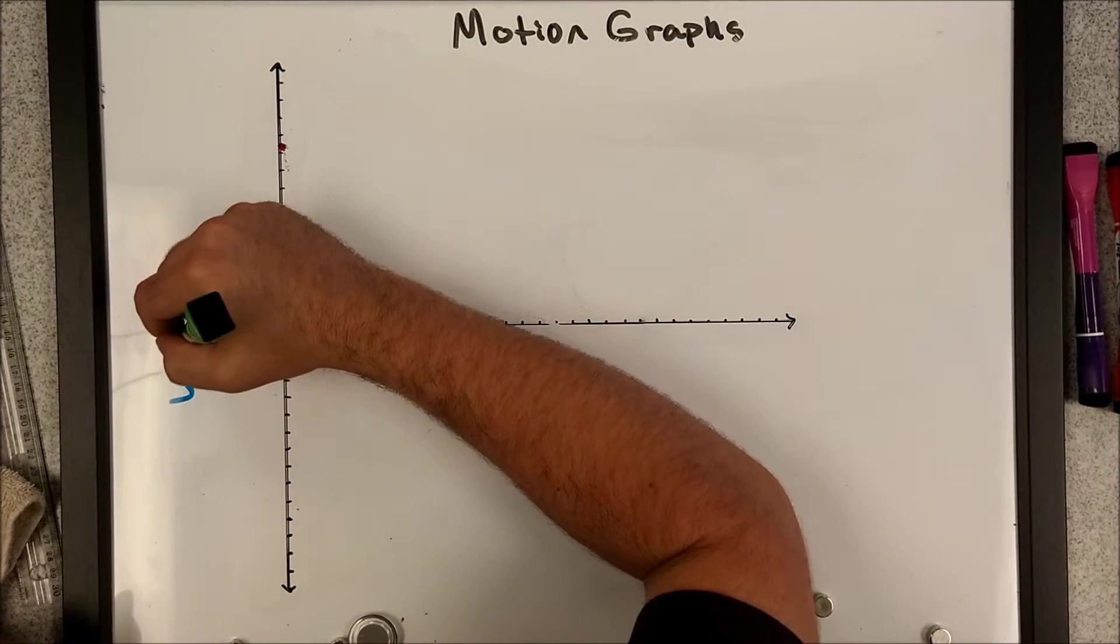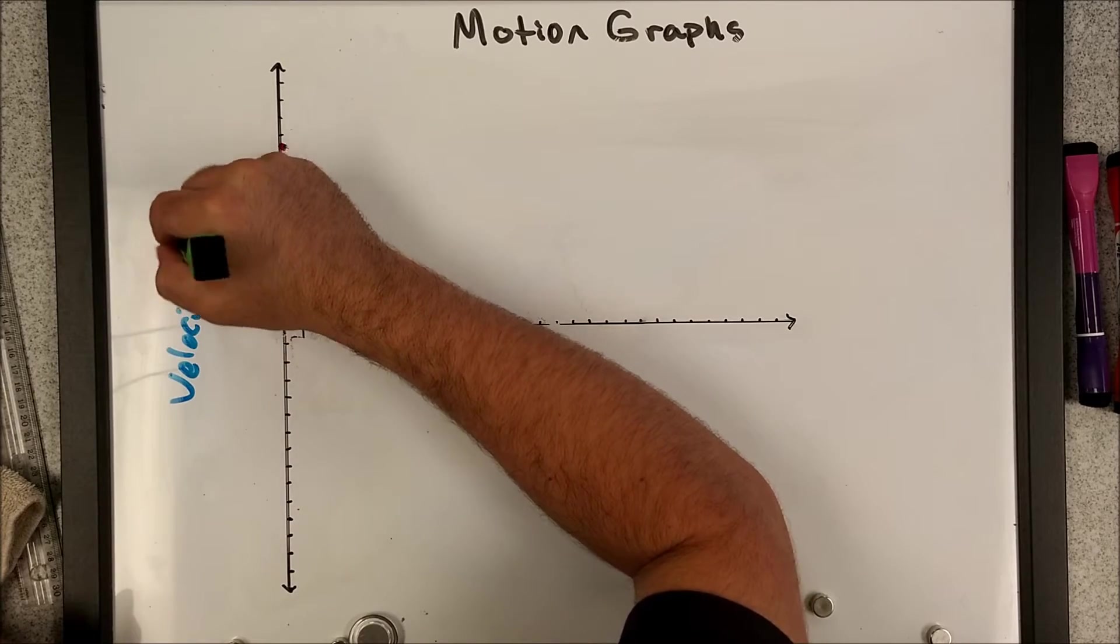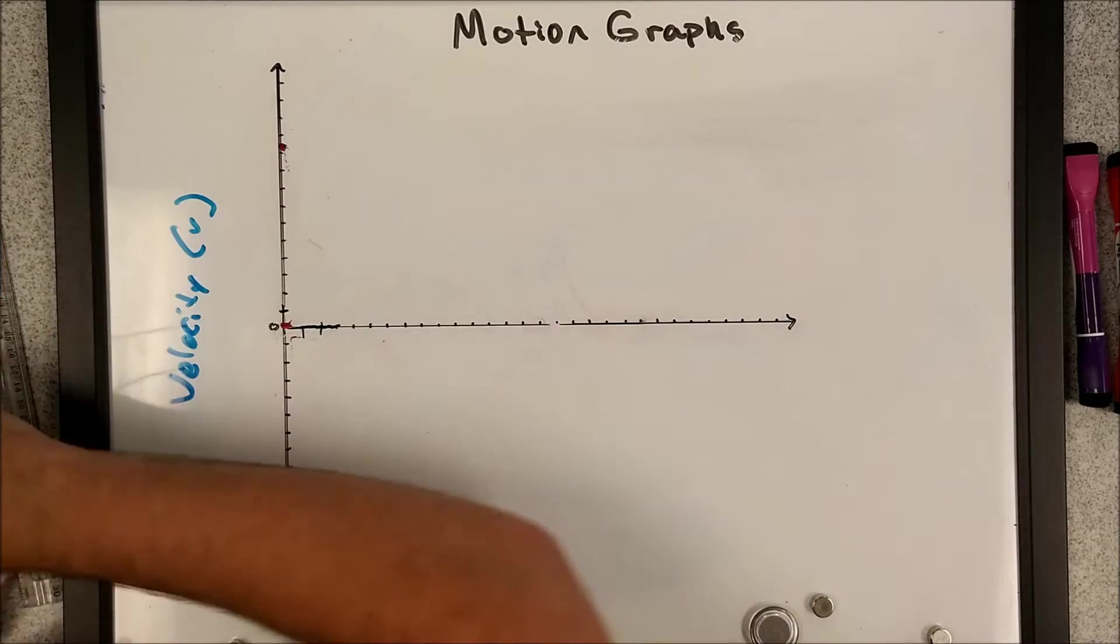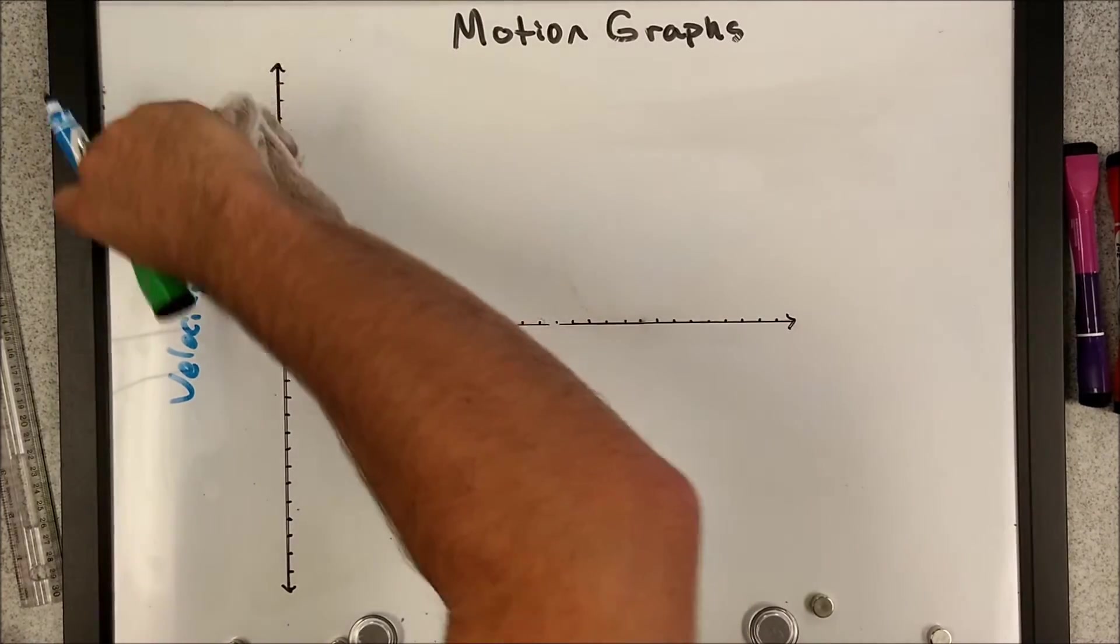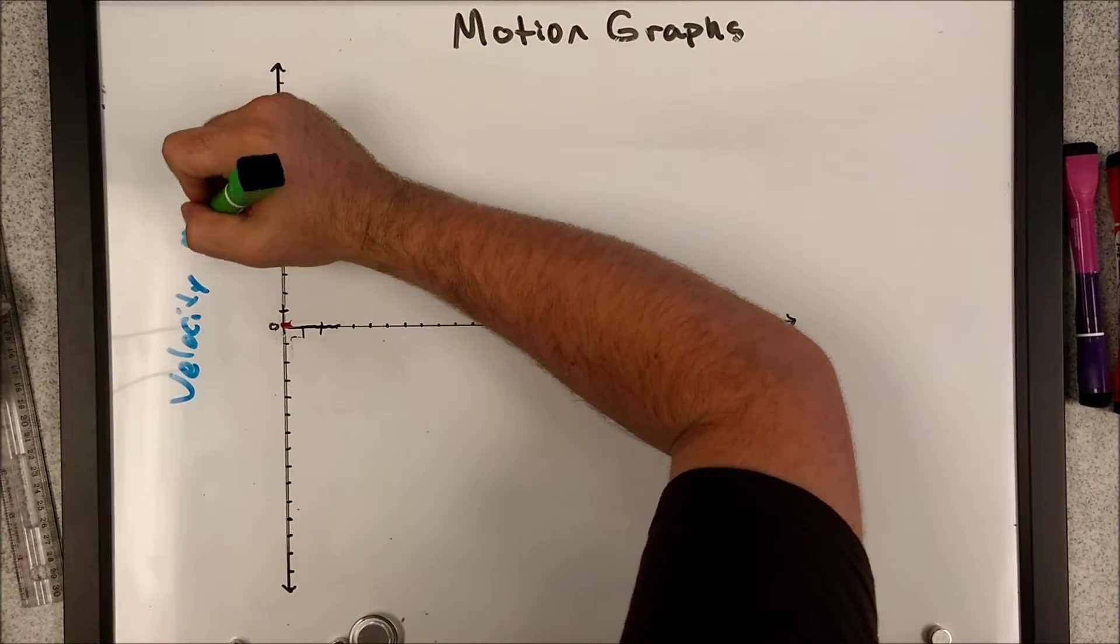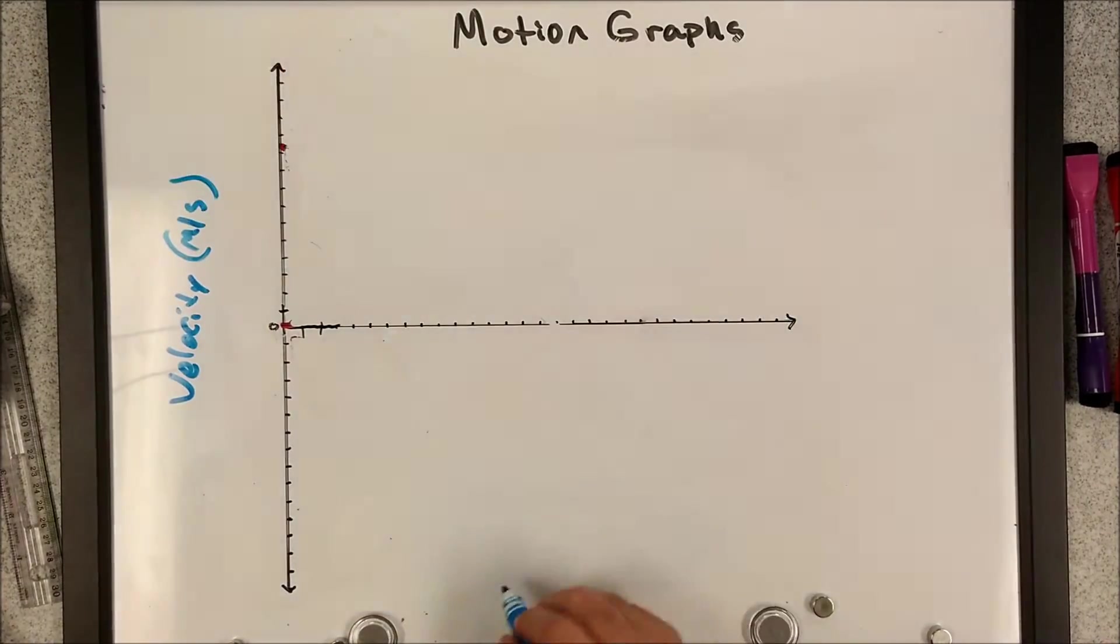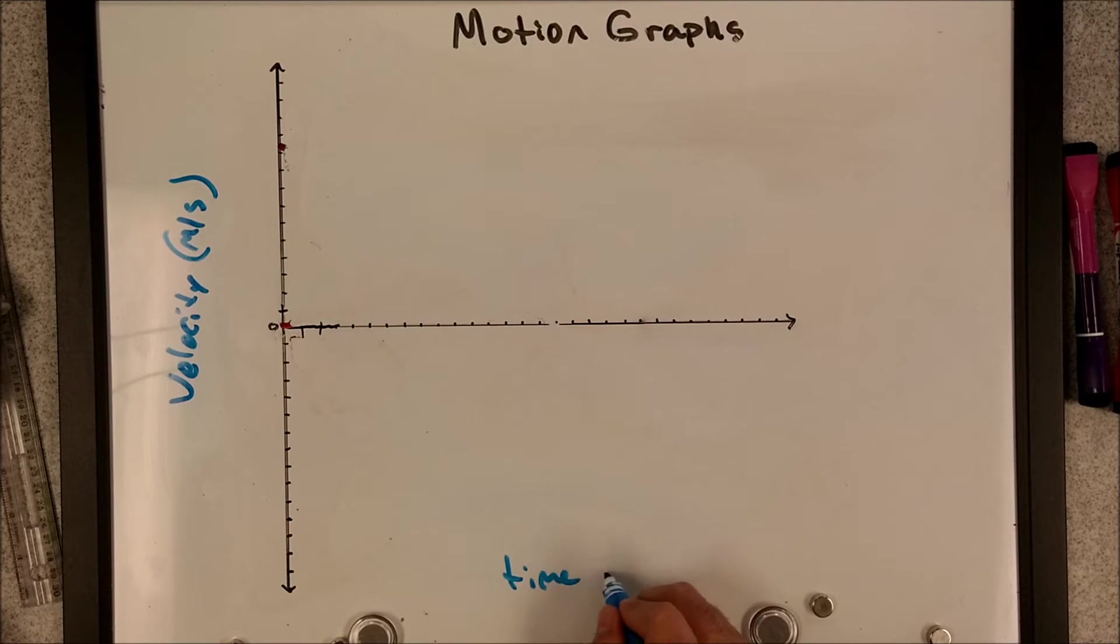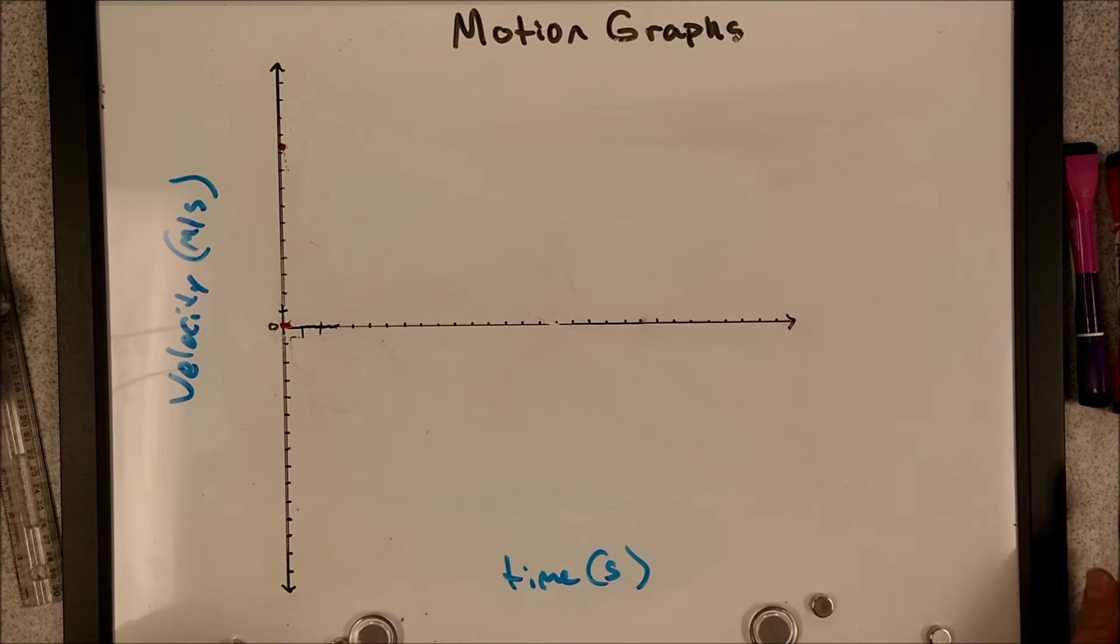We're going to put velocity on the y-axis. I can put my variable there, I'm going to put my units there. What are my units for velocity? Yep, meter per second. And then time down here is still seconds. It's still the independent variable, hence being on the x-axis.